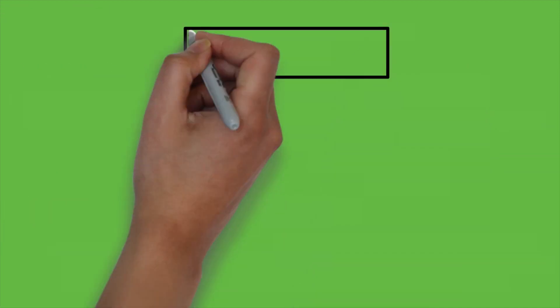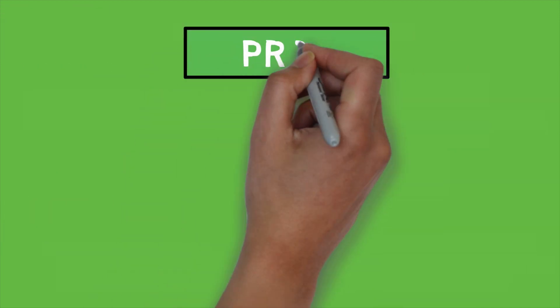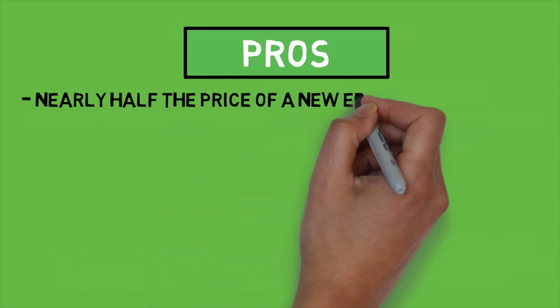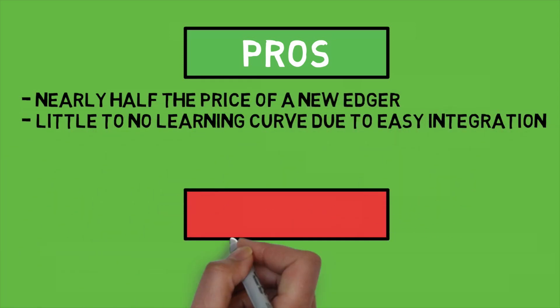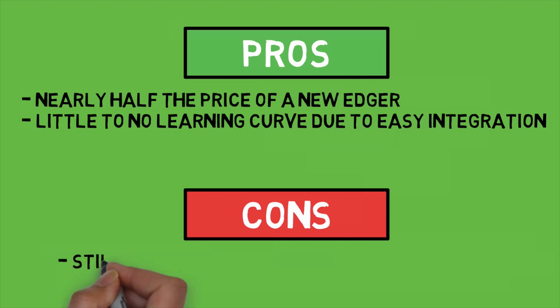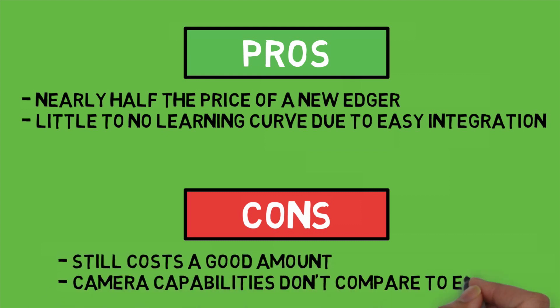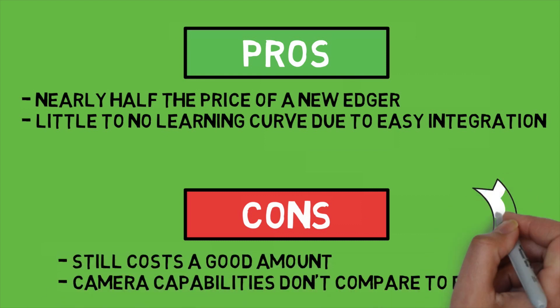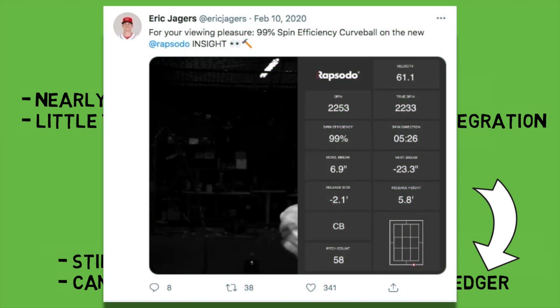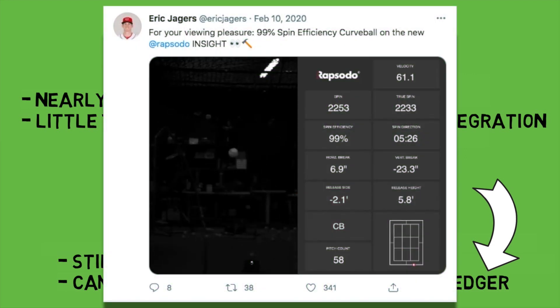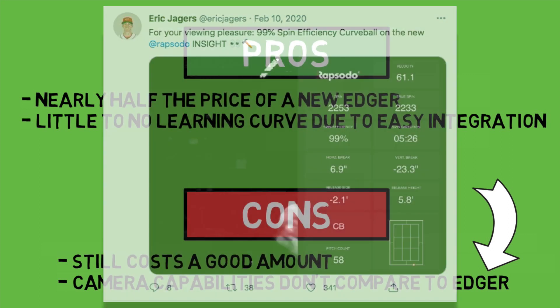For pros and cons on the Rapsodo Insight: the first obvious pro is that it's a much more affordable option than the Edutronic, and it's even easier to set up and use with the straightforward Rapsodo apps. The con is that the price tag is still no joke, and its capabilities don't rival the Edutronic. But as this video shows, you may not need such extreme frame rates for what you're trying to accomplish, and the easy integration with data alongside the review is a major bonus.